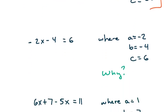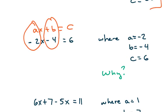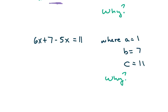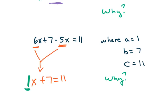The next example tries to be tricky: negative 2x minus 4 equals 6. A is negative 2, B is negative 4 — what's really being said is negative 2x plus negative 4 equals 6, because minus 4 and plus negative 4 have the same value. In the last example, negative 5x and 6x can be combined to give x plus 7 equals 11. If there's no number written in front of the variable, that number is 1, so A is 1, B is 7, and C is 11.